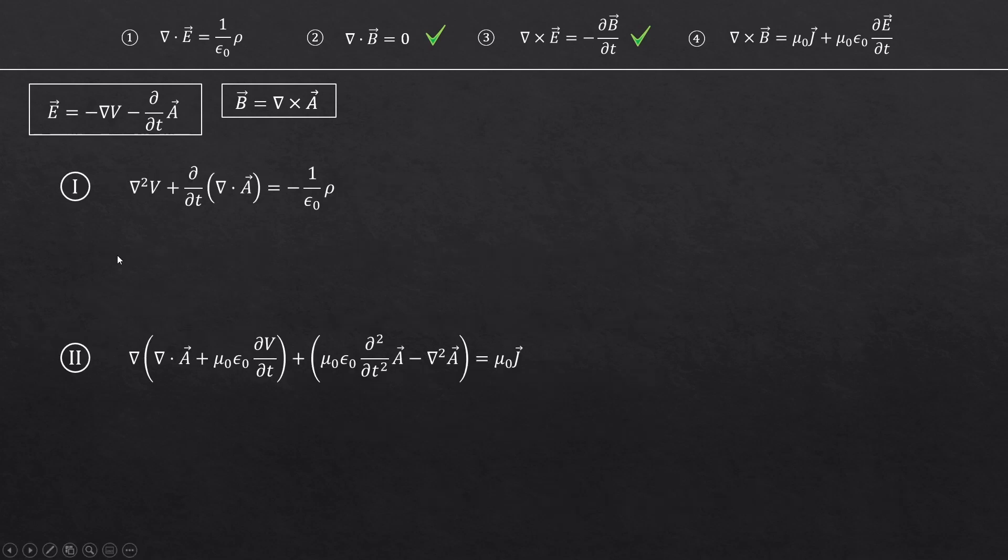Now, we have these two roman numbered equations. Look at this second equation. There is a problem with this term, including this gradient at the front. When we were replacing this electric field from the fourth Maxwell's equation with this new expression, we forgot to consider something.